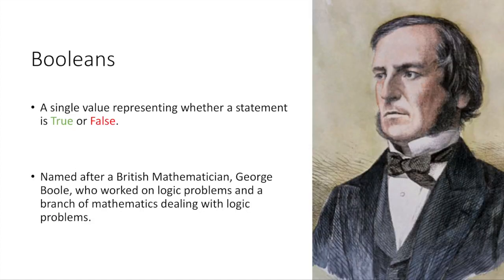But let's review a little bit what Booleans are. We talked about this last episode, but basically a Boolean is a single value representing whether a particular statement or a particular thing is true or is false. Like true would be correct or good, and false would be bad or incorrect. So it's been named after a British mathematician, George Boole, who worked on logic problems and mathematics dealing with logic.